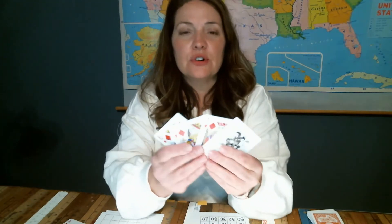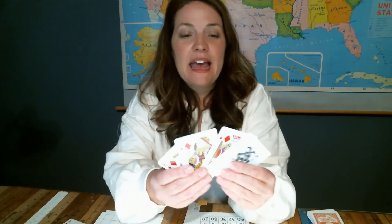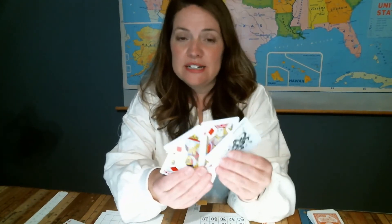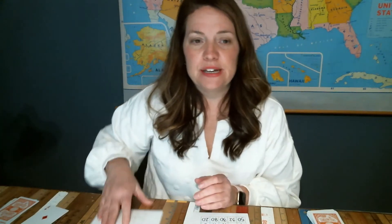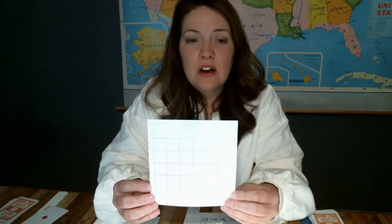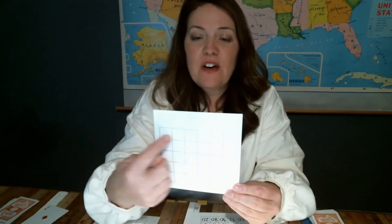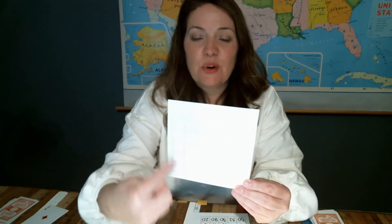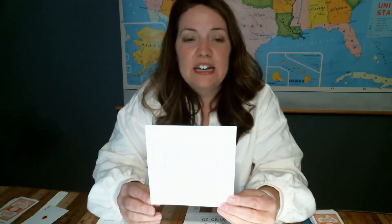First, you want to remove all the face cards and the jokers from the deck of cards. Face cards are the king, the queen, and the jack, and then you also want to take out the jokers. For this activity, we will use an ace to represent one. Next, you're going to create your bingo card. You will draw a 5 by 5 grid on a piece of paper — that's just 5 squares by 5 squares — so you will have 25 squares in a grid altogether.